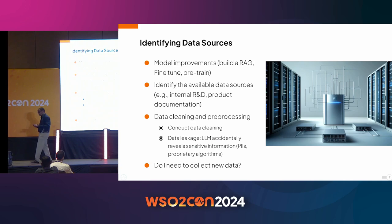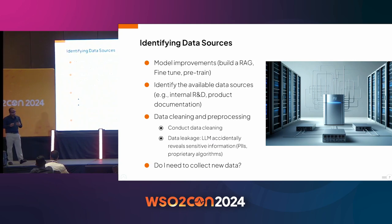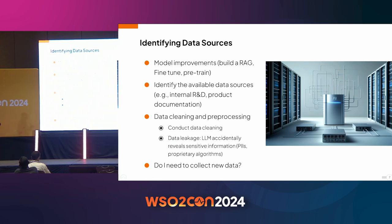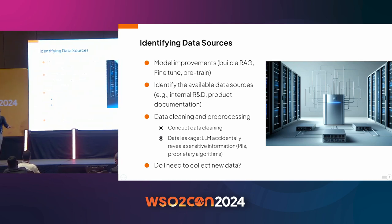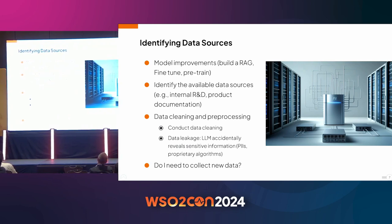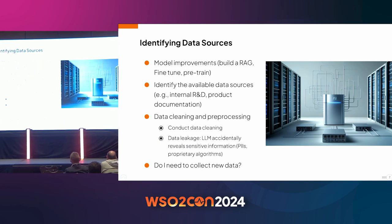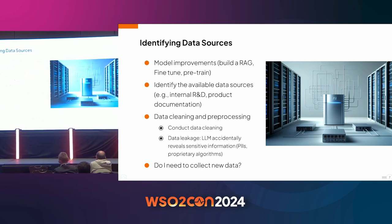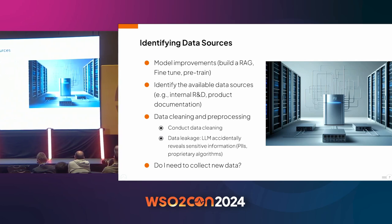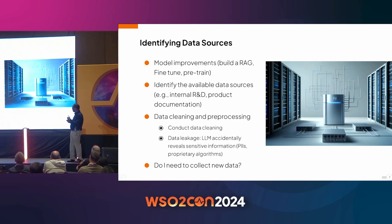For these things you need to have data — it can be product documentation, internal R&D material, and so on. But you can't use this data as-is. First, you clean the data, removing things like PII to prevent data leakages. Then there is pre-processing — you transform the data to a format suitable for training or fine-tuning. In some cases you may not have the data yet, so you'll have to build pipelines to collect it and then start building the models.